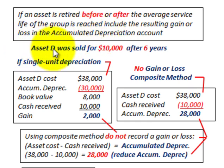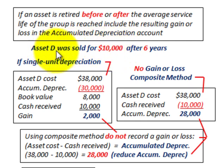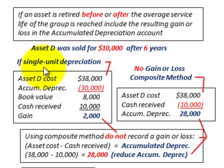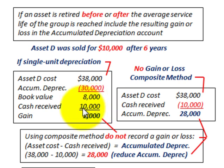Say asset D was sold for $10,000 after 6 years. Asset D had a 7-year life, so it was disposed of before its full life. Under single unit depreciation, where the asset is depreciated separately, we'd take asset D's cost of $38,000 less its accumulated depreciation of $30,000, giving a book value of $8,000. Since cash received was $10,000, we'd recognize a gain of $2,000 — the difference between book value and cash received.